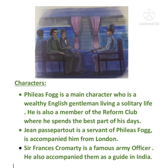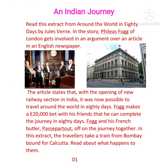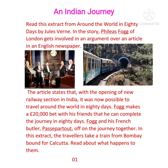Let's learn the story line by line. If you have your textbook, please keep it with you, and have a pencil with you. Whenever the teacher is telling an important point, please take notes. 'Journey' means traveling. In this story, Phileas Fogg of London gets involved in an argument over an article in an English newspaper. The article states that with the opening of a new railway section in India, it was now possible to travel around the world in 80 days. Fogg makes a 20,000 pound bet with his friends that he can complete the journey in 80 days, and he and his French butler Passepartout set off on the journey together.